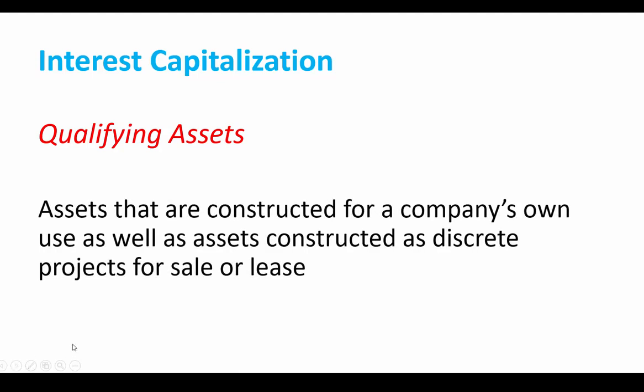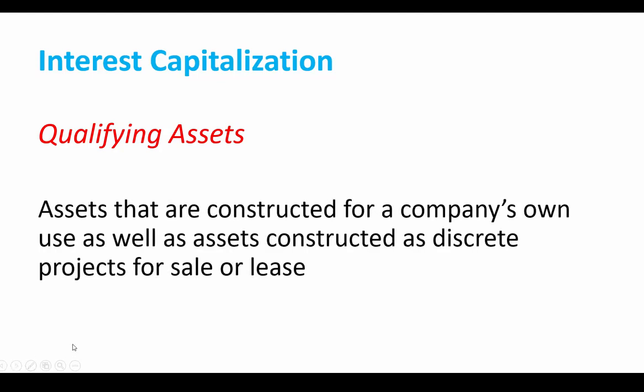What kinds of assets are we talking about? There's two kinds of assets. One would be assets that are constructed for a company's own use. The other one is assets constructed as discrete projects for sale or lease. We're paying interest to borrow money to complete an asset. This is not inventory that you're creating thousands and millions of in a year. This is something that's going to take some time to complete. Could be an asset that they're building for themselves or it could be an asset that they're building for a customer.